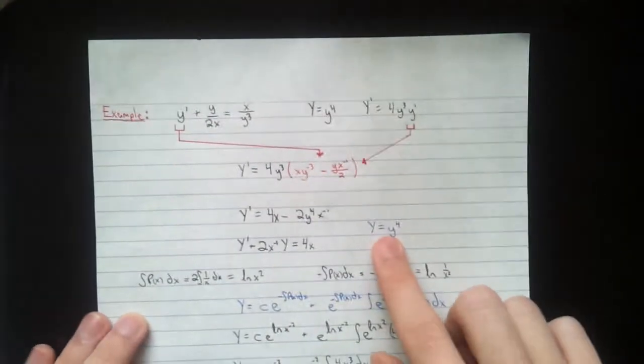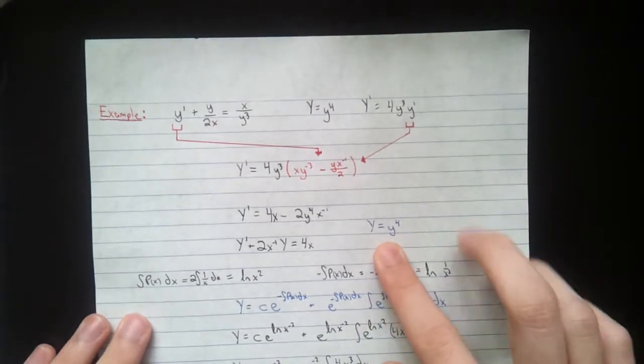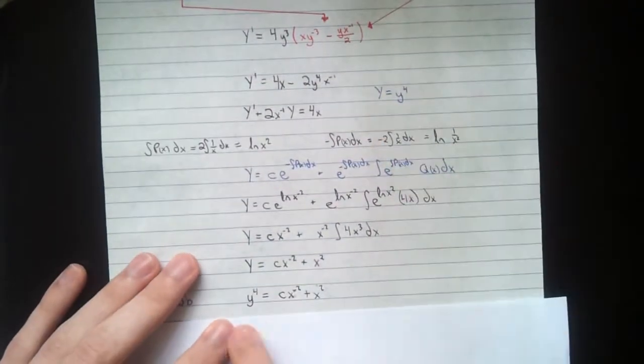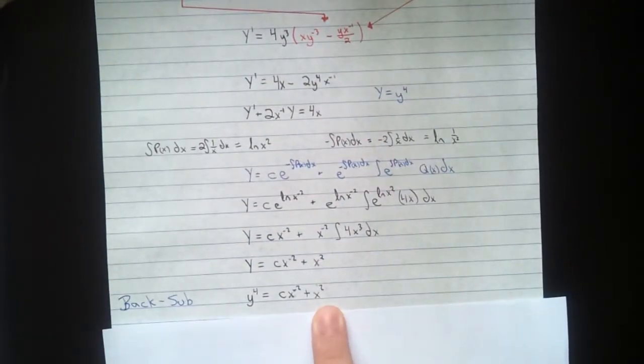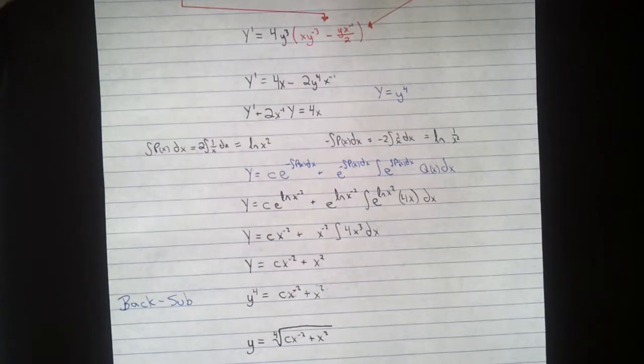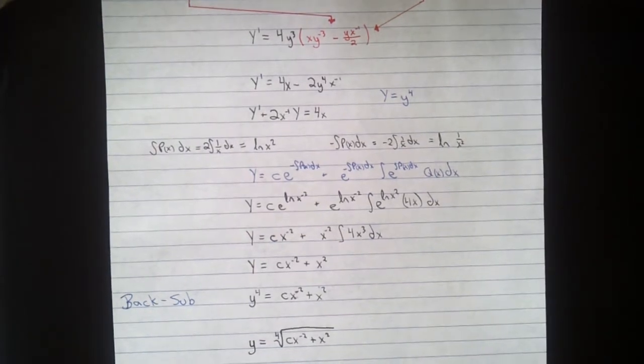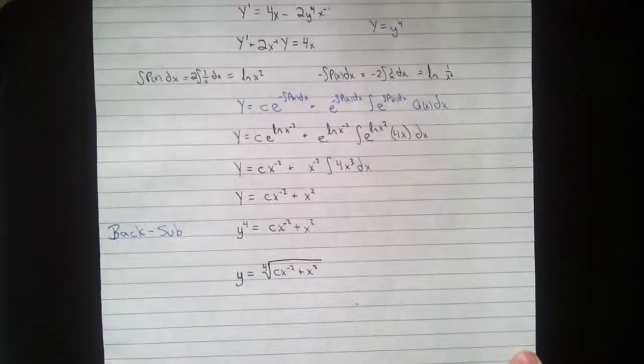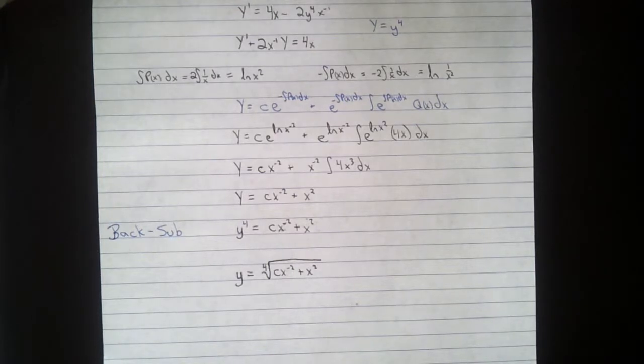Remember, we have to back sub because we had this thing here. y equals little y to the 4. So y to the 4 equals cx to the negative 2 plus x squared. And I've just gotten that exponent over. So we have y equals the 4th root of cx to the negative 2 plus x squared. That is all.